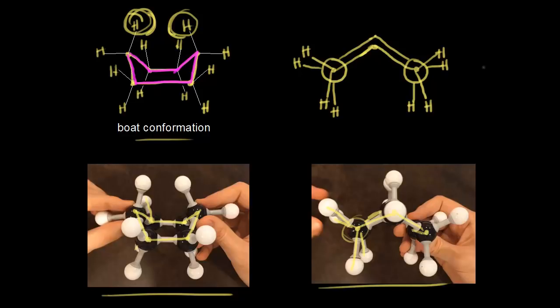So the boat conformation is much higher in energy compared to the chair conformation — the chair conformation is the lowest in energy. There are actually other conformations of cyclohexane: the boat conformation can twist a little bit to give you twist boat, and there's also a half chair. But we're not really too concerned with those other conformations. We're going to focus on the chair conformation in future videos, because cyclohexane spends most of its time in the chair conformation.